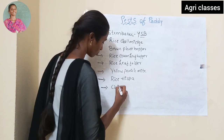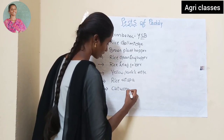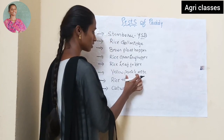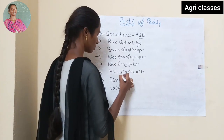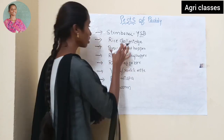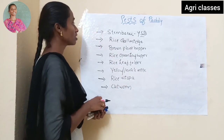Then Paddy Cut Worm. Yellow Mite is separate and Paddy Common Mite is different. So these are the important pests of Paddy.